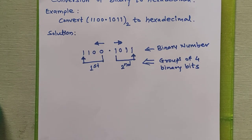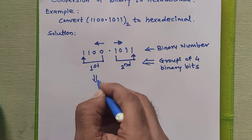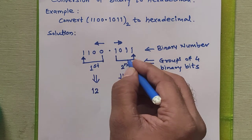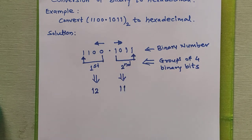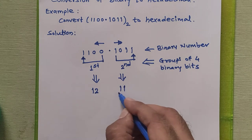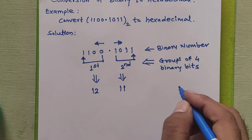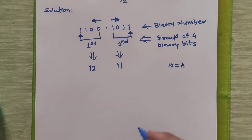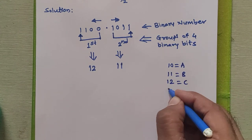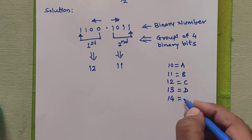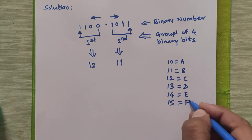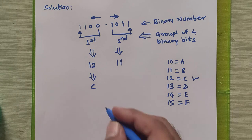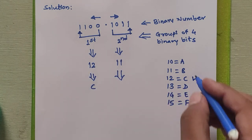The next step is to get the hexadecimal equivalent for each group. 1100 is equal to decimal 12, and 1011 is equal to decimal 11. In the hexadecimal number system there are 16 valid symbols: digits 0 to 9, then 10 is represented by A, 11 by B, 12 by C, 13 by D, 14 by E, and 15 by F. So 12 is C and 11 is B.